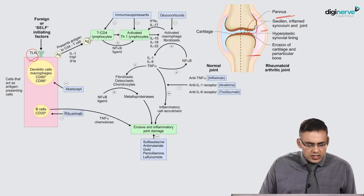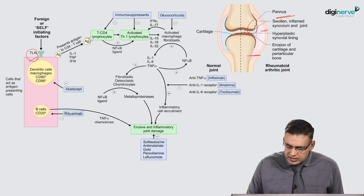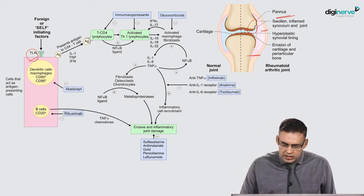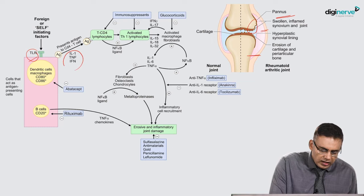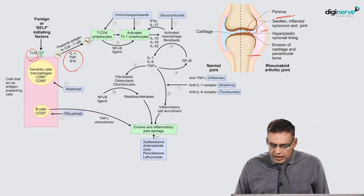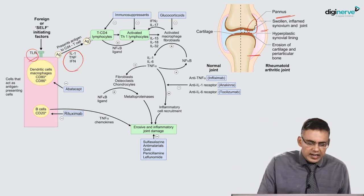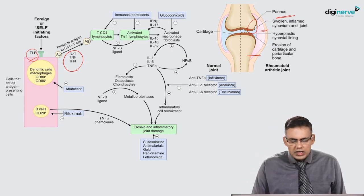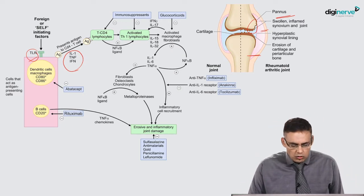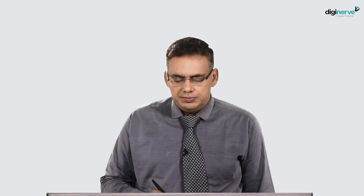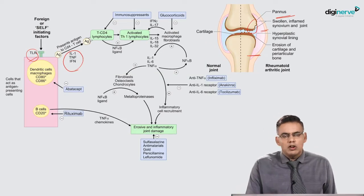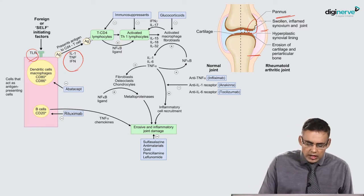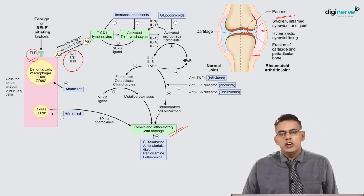The chronic inflammation process is initiated by T cells which migrate into the joint and cause release of inflammatory cytokines like tumor necrosis factor alpha and interleukin-1. These further activate and result in release of additional cytokines, producing an inflammatory response which causes destruction of the joint, ultimately resulting in erosive and inflammatory joint damage.